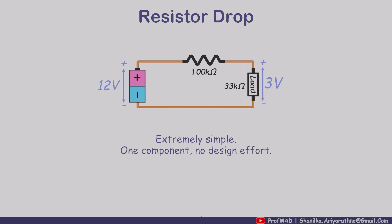Fair question. It's extremely simple. Add one resistor and you're done. But here's the catch. In a voltage divider, current is always flowing through both resistors, no matter how much power your load actually needs.